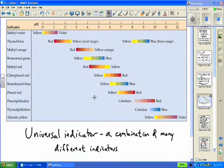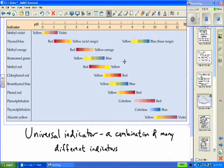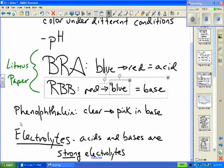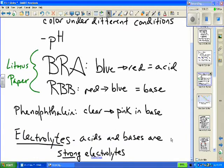Here's an example of a number of different indicators that are combined to form universal indicator. You'll see some examples of this later in the week, which is a combination of many different indicators, and its different possible color combinations will tell you what pH range you are in. The other thing to remember about acids and bases is that they are ionic. They are strong electrolytes. They dissociate in water and will conduct electricity.